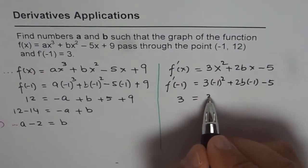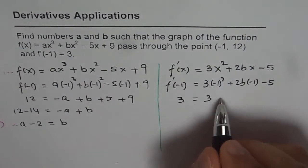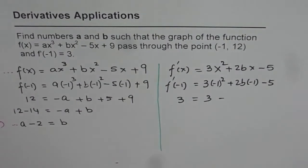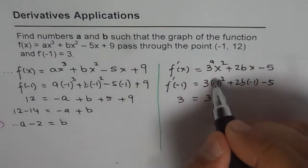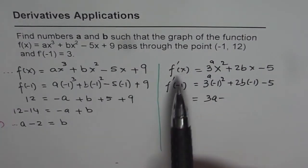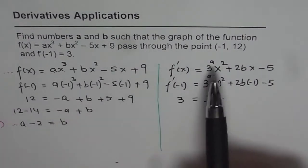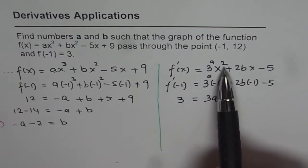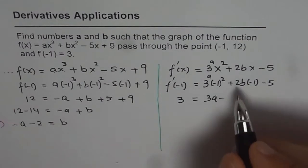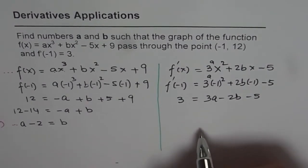So that is 3, and I missed the term a, so let me write down a in between. 3a. Derivative will be 3ax², so I missed a, 3ax², 3a, x was minus 1, so that gives me 3a. And here we have minus 2b, minus 5.